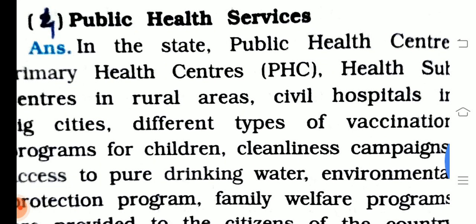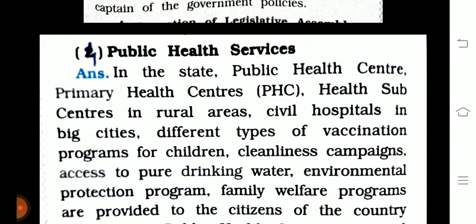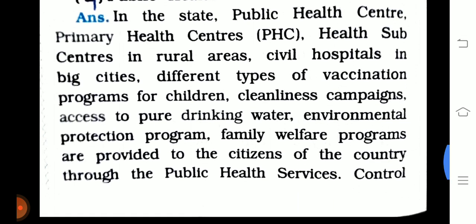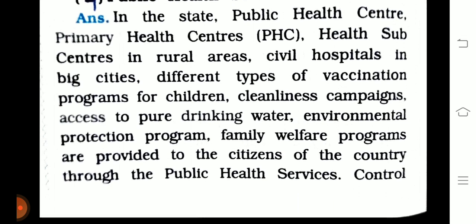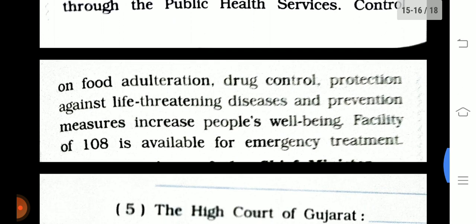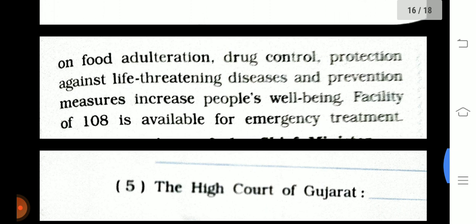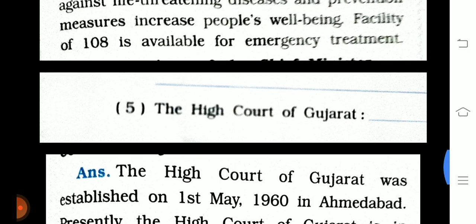Question 7, part 4: Public health services. In state public health services, the following are provided: primary health centers (PHC), health sub-centers in rural areas, civil hospitals in big cities, different types of vaccination programs for children, cleanliness campaigns, access to pure drinking water, environmental protection programs, family welfare programs, control on food adulteration and drugs, protection against life-threatening diseases, and the 108 emergency treatment facility.